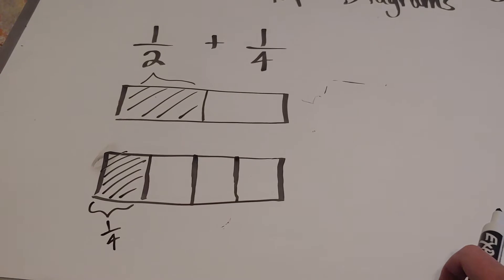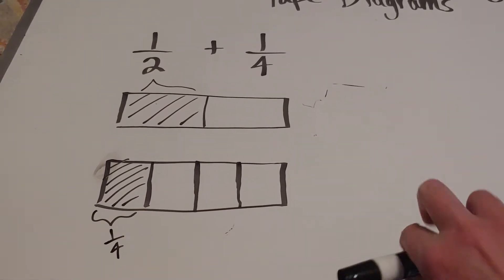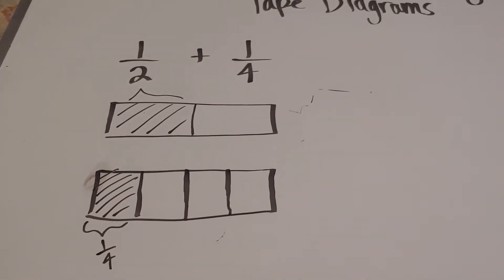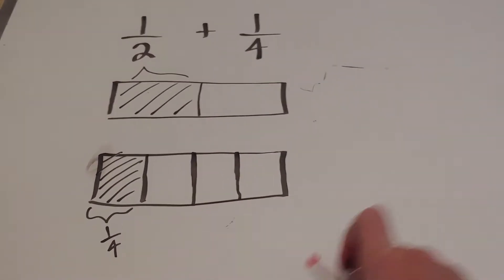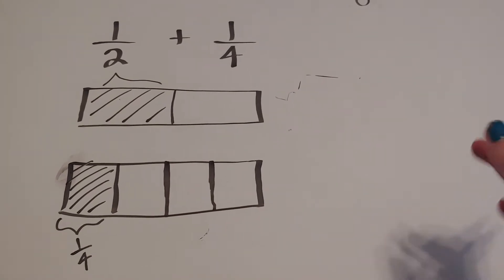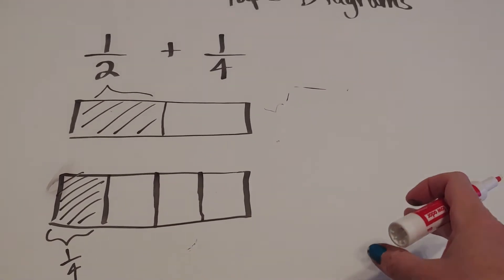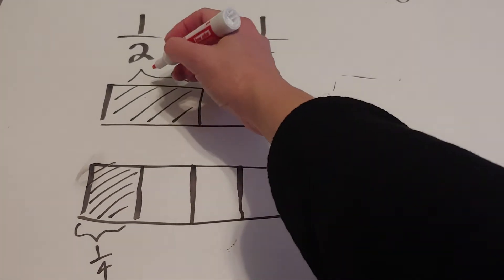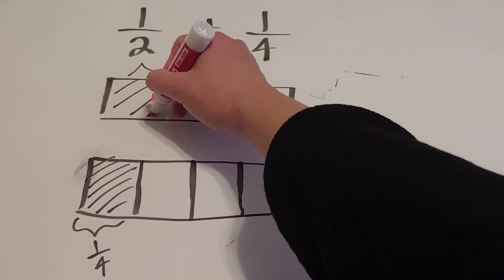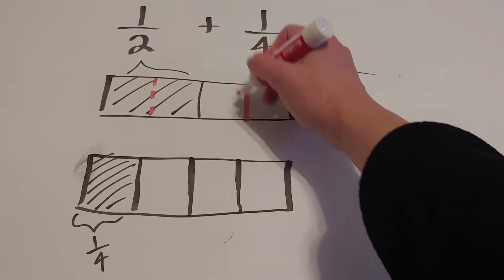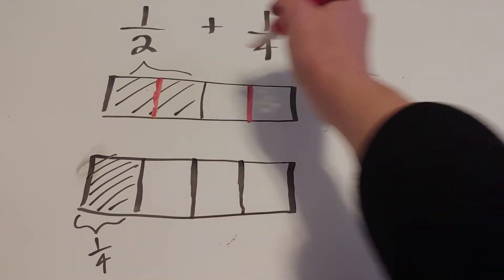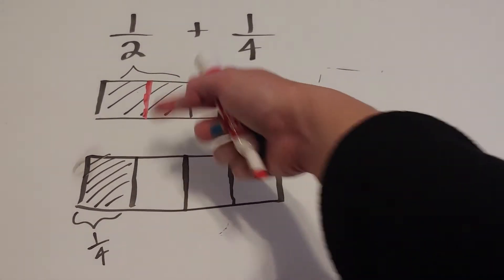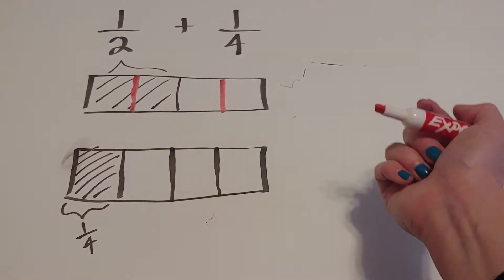The idea here is that we can only compare or add like things, so that means I need to have the same denominator. So what they want common core students to do is to experiment. They'd say, okay, what happens if we cut each of these blocks in half? Are these now the same size blocks? And that's why I think stacking them vertically — yes, they are the same size blocks.